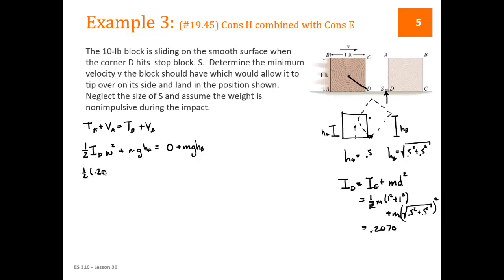If we plug in all of those numbers with a mass of 10 over 32.2, we will get 0.2070 as our ID. Plug in ID over here, we get 0.5 times 0.2070 omega squared plus mass times G is the weight, that's 10, times HA is 0.5, is equal to 10 times the square root of 0.5 squared plus 0.5 squared. And we can solve for omega to be 4.473 radians per second.